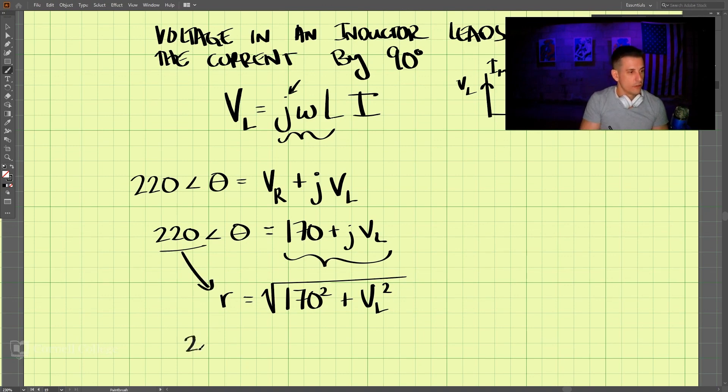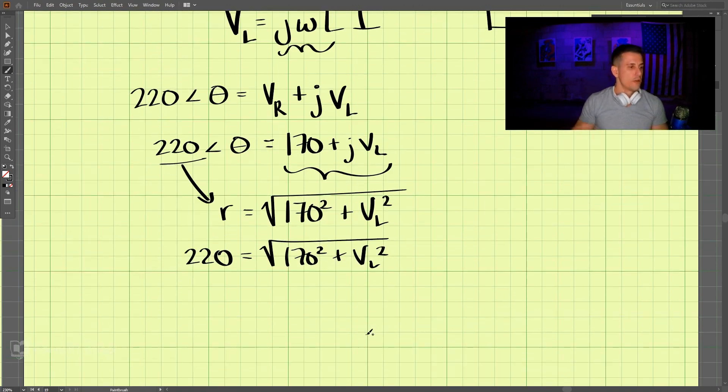220 equals the square root of 170 squared plus VL squared. So the first thing we do is square the 220, then we get 170 squared plus VL squared.